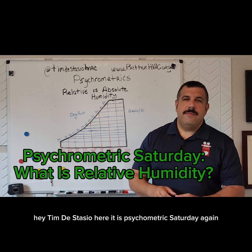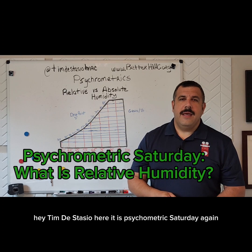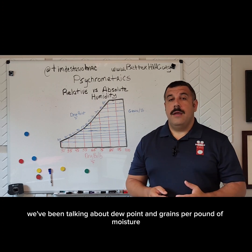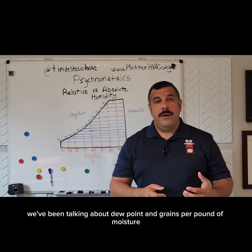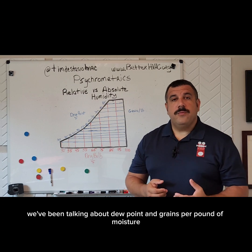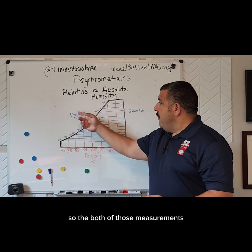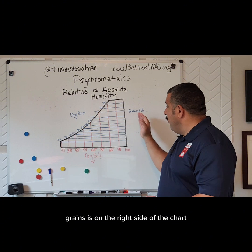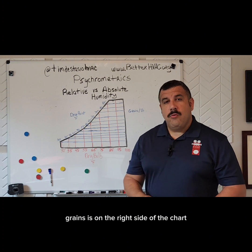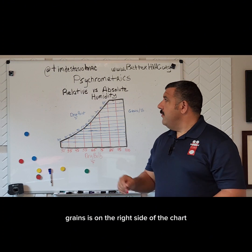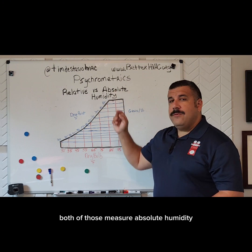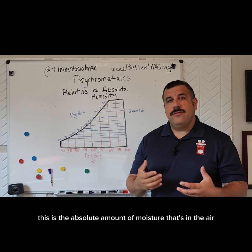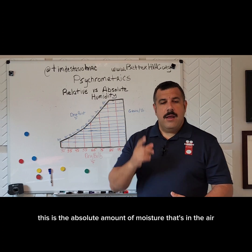Hey, Tim DeStasio here. It is Psychrometric Saturday again. For the last, I don't know how many episodes, we've been talking about dew point and grains per pound of moisture. Both of those measurements — dew point is on the left side of the chart, grains is on the right side of the chart — both of those measure absolute humidity. This is the absolute amount of moisture that's in the air.